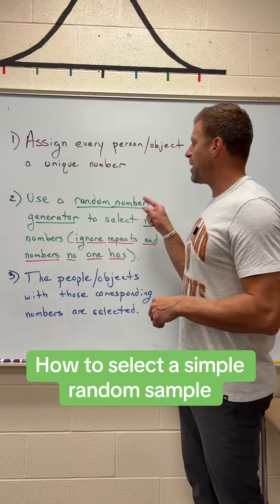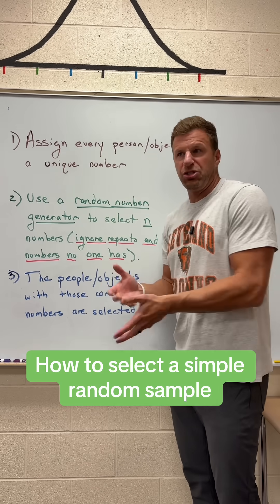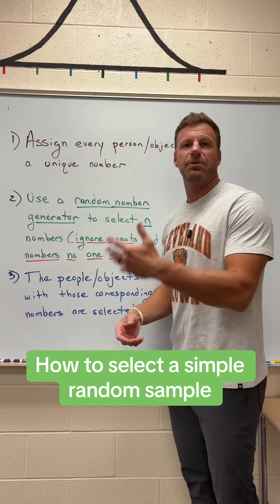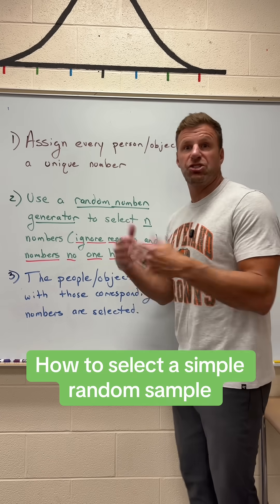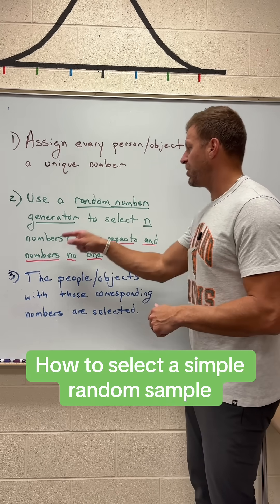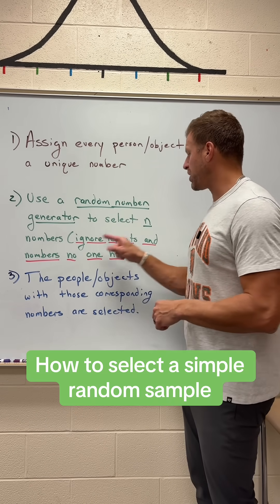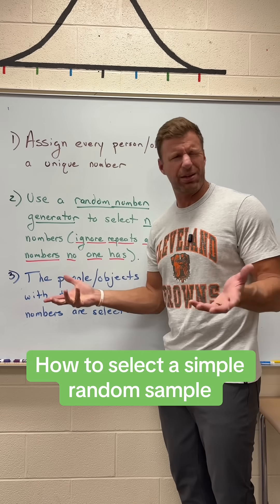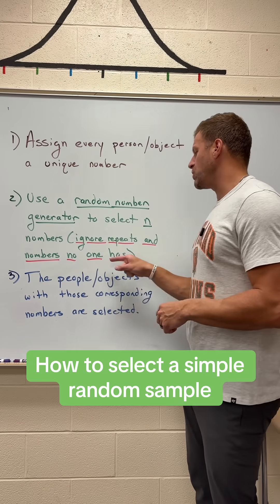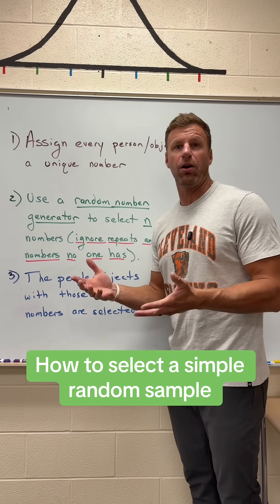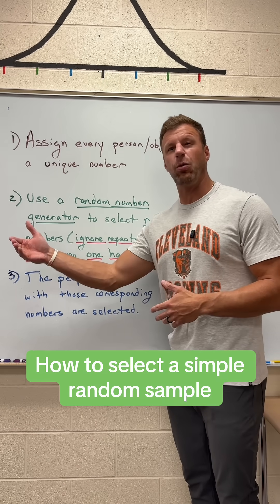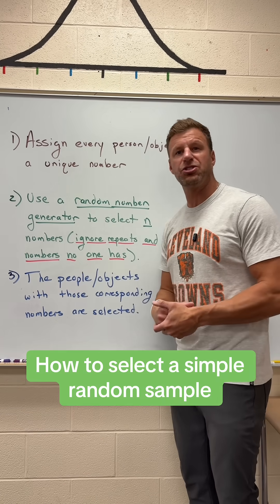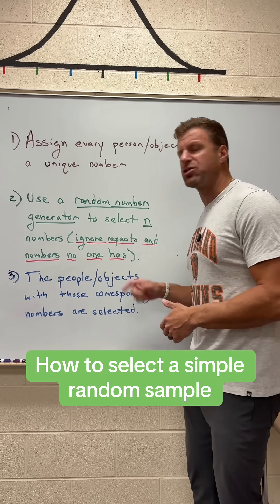Then we're going to use a random number generator — just a computer program, whether it be something on the internet, on your calculator, something that's going to generate random numbers to select the numbers. We have to make sure we ignore repeats, because you don't want the same person picked twice. And we have to ignore numbers that nobody has. If you have 150 people and number 161 gets selected, nobody has 161, so you ignore it.